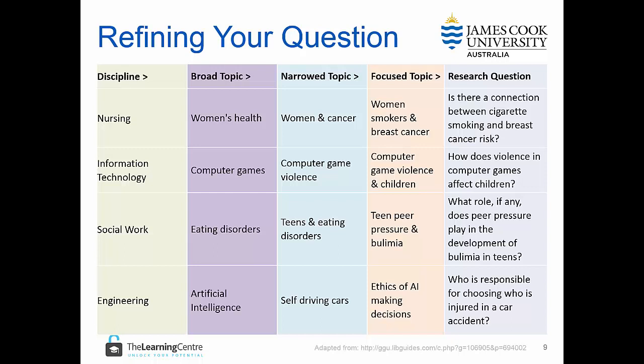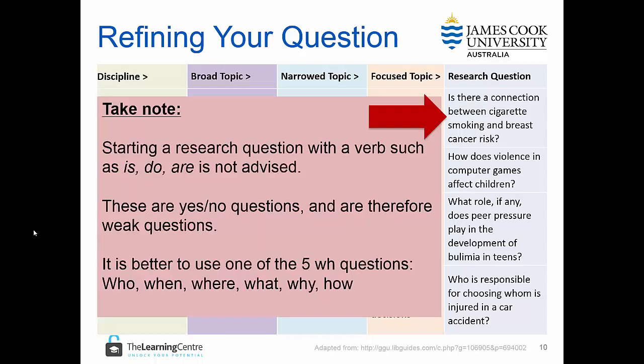Another example on your screen is for the discipline of engineering, where the broad topic is artificial intelligence. They've narrowed it down to self-driving cars, then focused the topic to ethics of artificial intelligence making decisions. The research question developed is: Who is responsible for choosing who is injured in a car accident? Something to note is that starting a research question with a verb such as is, do, or are is not advised, because these are yes/no questions. It is much better to use one of the WH questions or how.